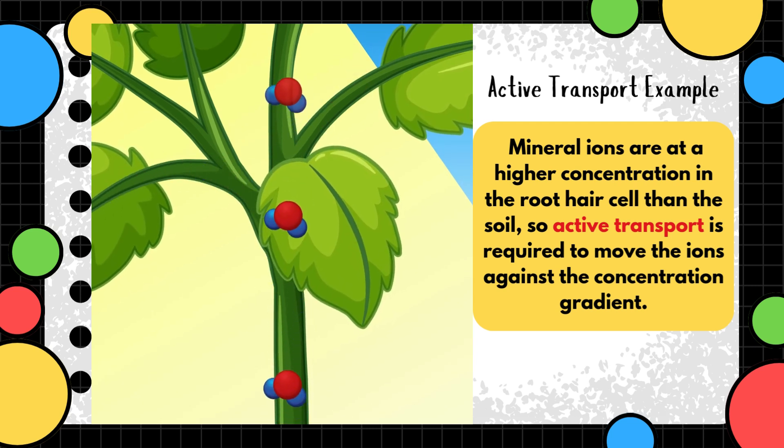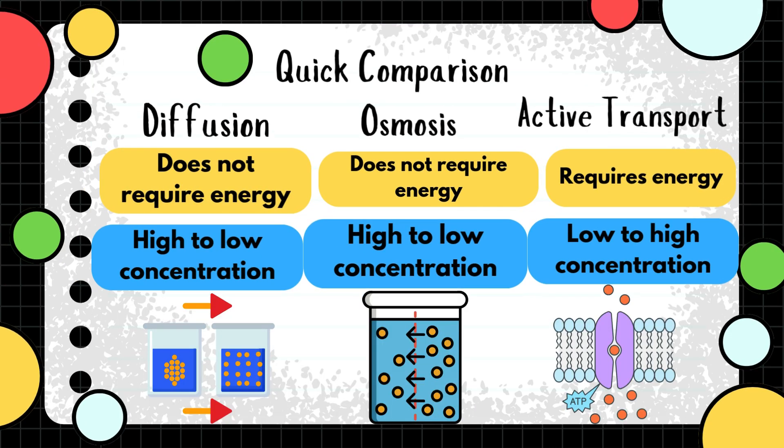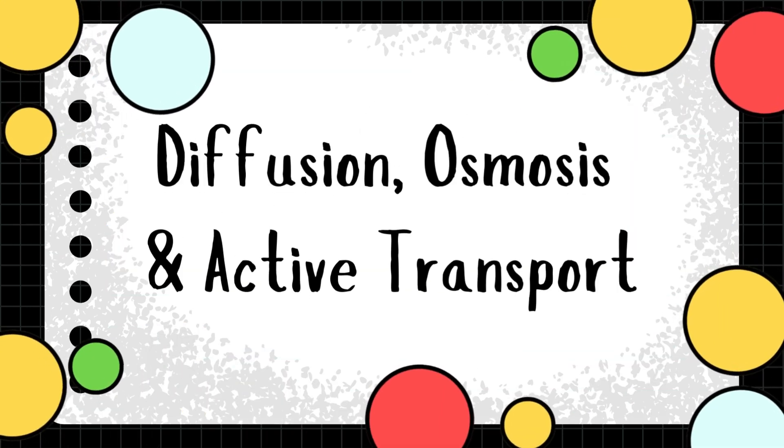Here's a quick comparison. Diffusion does not require energy, but active transport requires energy. Diffusion and osmosis go from high to low concentration, but active transport is the opposite - low to high concentration. That's all guys, thank you.